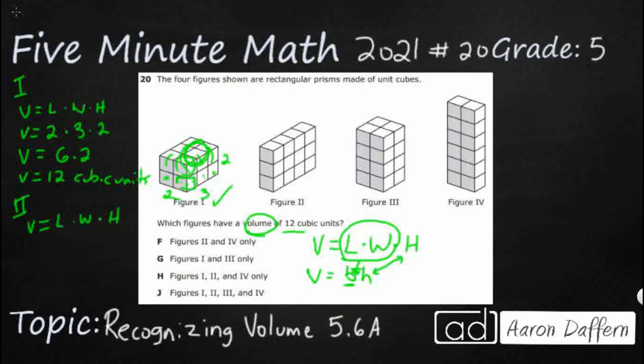We are going to say volume equals length times width times height. And we are going to say that our length is, we'll call it 1. Our width is 1, 2, 3, 4. And then our height is just 1, 2, 3. So we've got 1 times 4, that's 4, times 3.